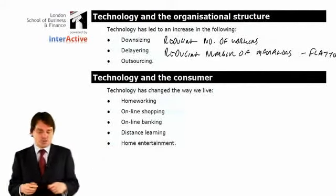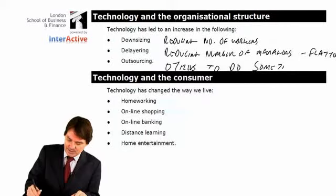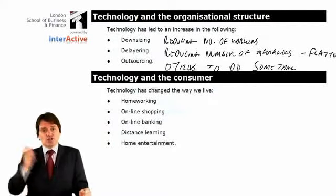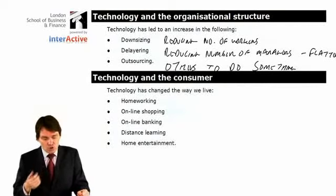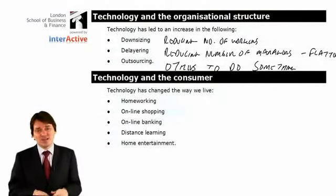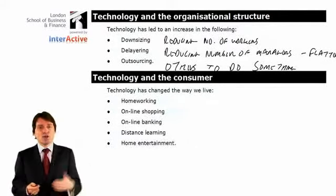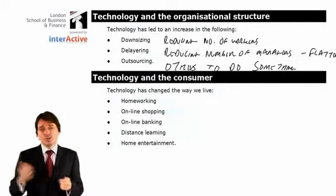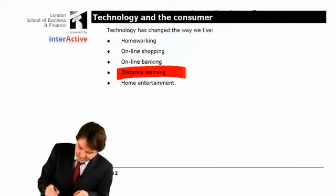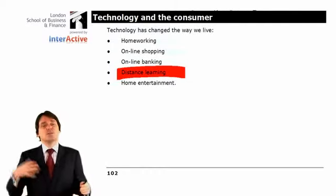Outsourcing means getting others to do something rather than doing it yourself — you pay somebody else to do it. Technology has also changed the consumer side: working from home, shopping and banking online. Retail organisations and banks have been changed enormously. I can't remember the last time I physically went inside a bank — I get cash from an ATM and pay bills online. Distance learning is another example: what you're doing right now would not have been possible 20 years ago. Technology changes the way that people do things.